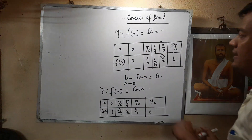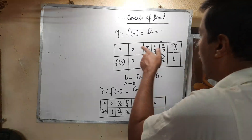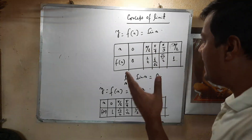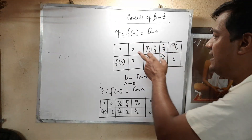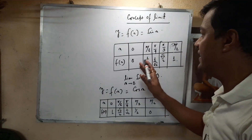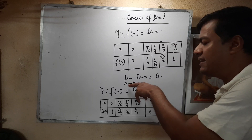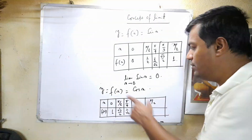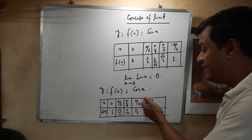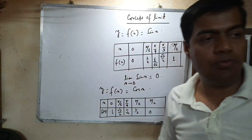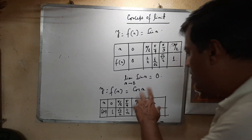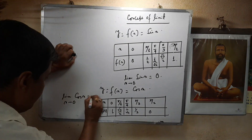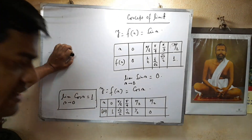Comparing the two tables: in the first table, when x increases, sin x also increases — so y = sin x is an increasing function of x in the range [0, π/2]. Therefore, limit x tending to 0 of sin x = 0. For the cosine table, when x increases, cos x decreases — so cos x is a decreasing function in the first quadrant. Therefore, limit x tending to 0 of cos x = 1.